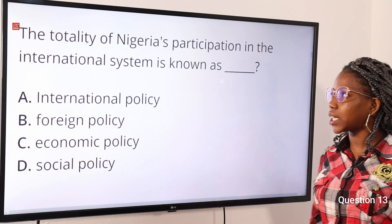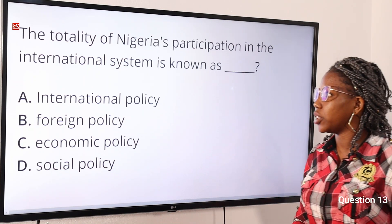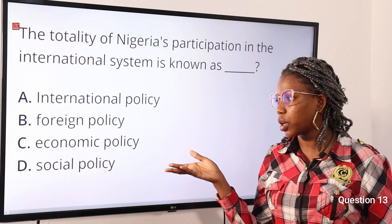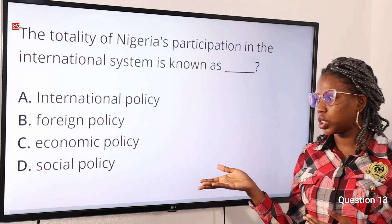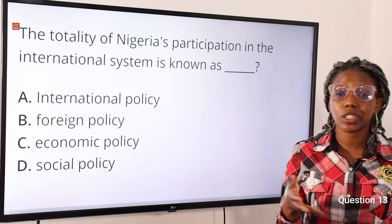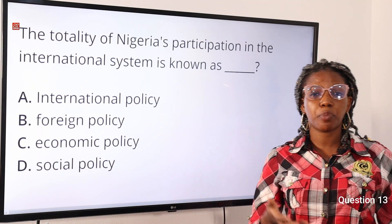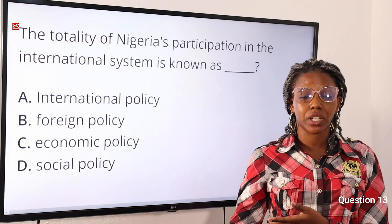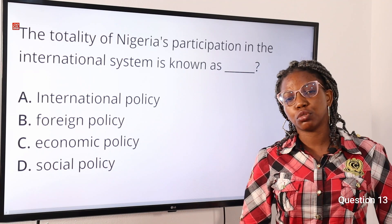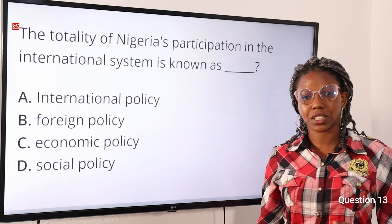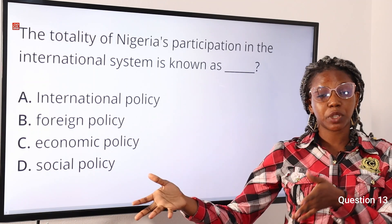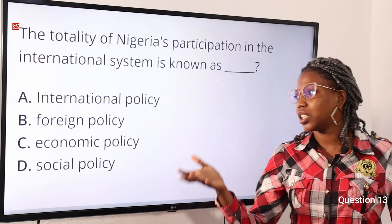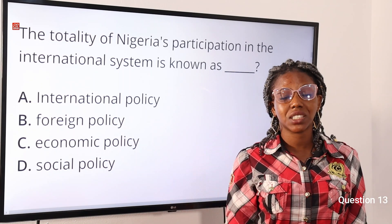Question thirteen: the totality of Nigeria's participation in the international system is known as — option A: international policy, option B: foreign policy, option C: economic policy, option D: social policy. The answer is option B, foreign policy. Foreign policy concerns a country's involvement or participation in international affairs and is designed to achieve national objectives.